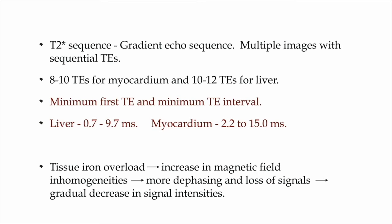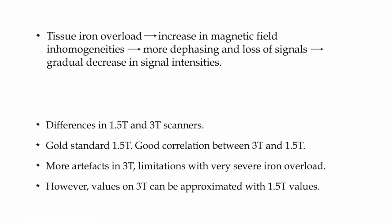Due to the T2 star effect, magnetic field inhomogeneities cause dephasing of protons. When tissue iron overload increases in a particular tissue, there will be an increase in magnetic field inhomogeneities, causing more dephasing and greater T2 star effect, resulting in a loss of signal. This produces a gradual decrease in signal intensities. If the iron overload is higher, there is a steeper decrease in signal intensities. This phenomenon of decreasing signal intensity is used to calculate and quantify iron overload in that particular tissue.